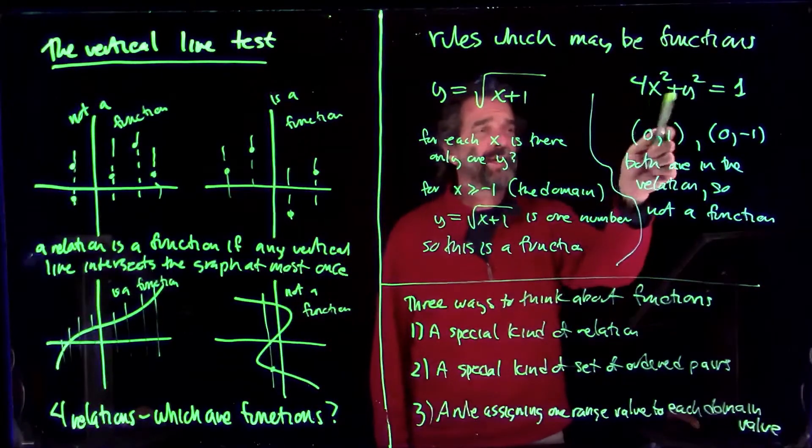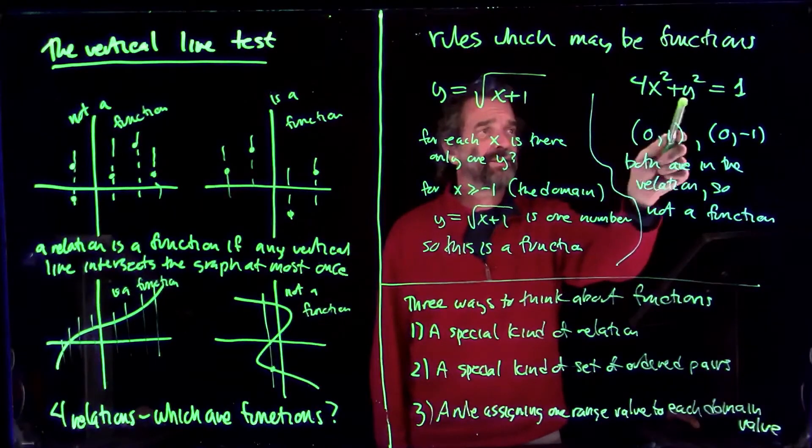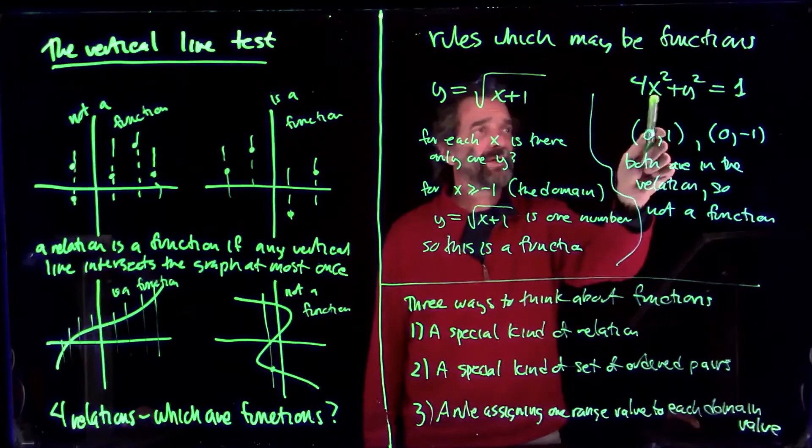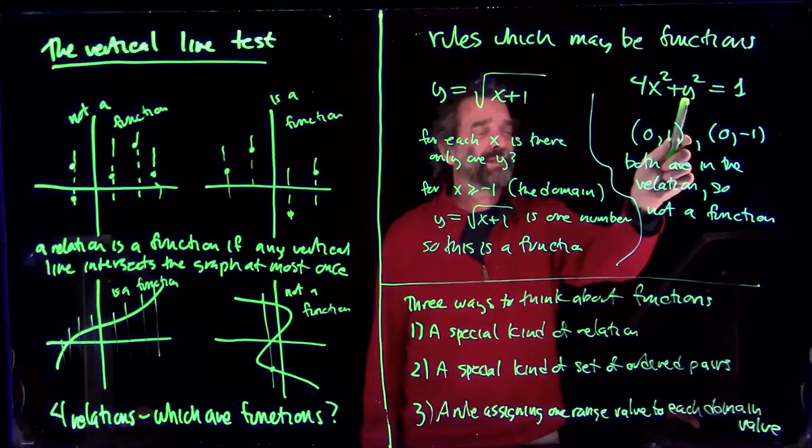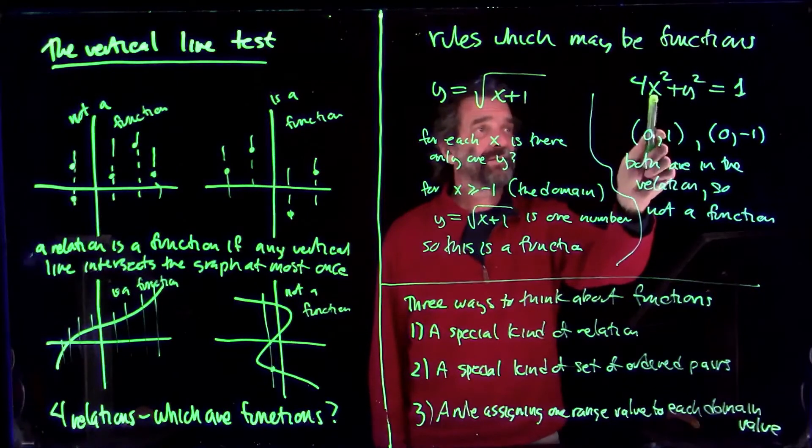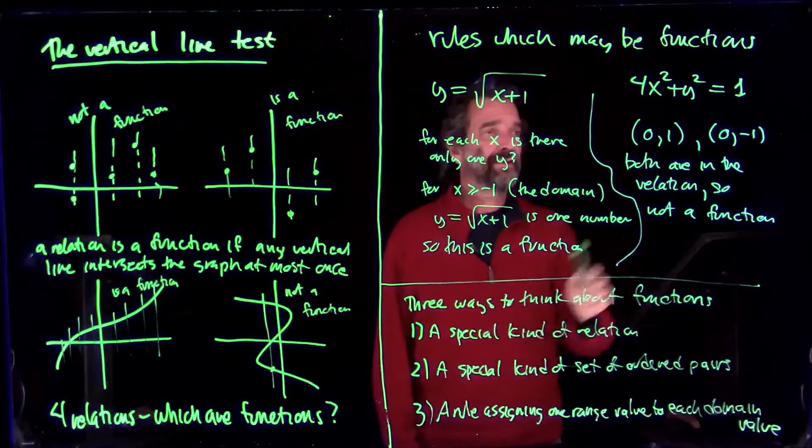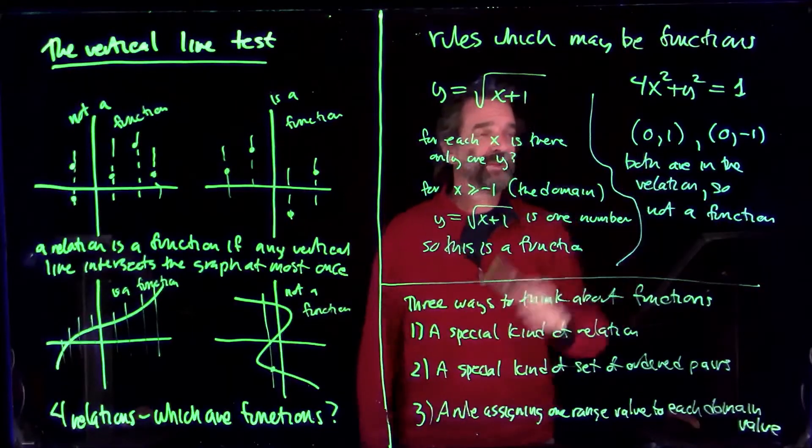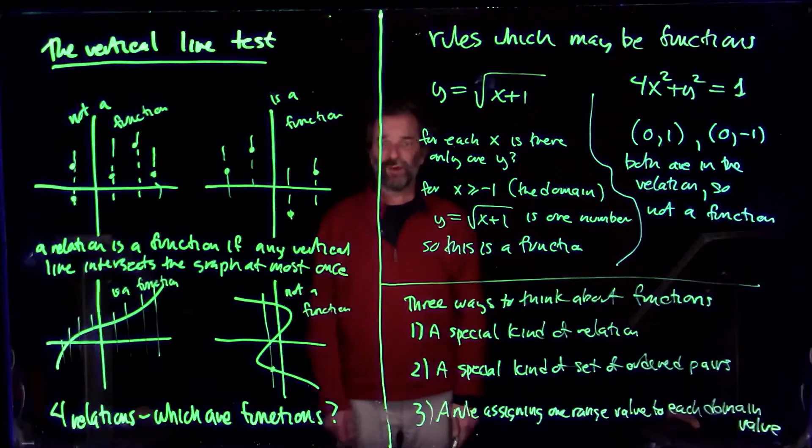Over here, for all the x's and y's you might have, there's plenty of x's in the domain for this, where there's two y's, because it's 4x squared plus something squared is one. Plus or minus that something squared is also going to be the same number squared. And so xy and x minus y will both be in the relation. Here's an example of 0, 1, 0, minus 1. So you can tell there's many instances in that second case where it's not a function.